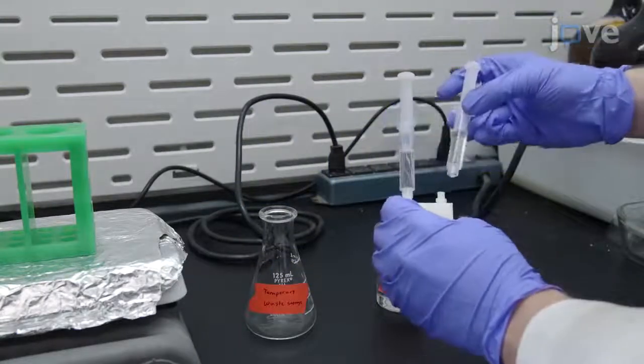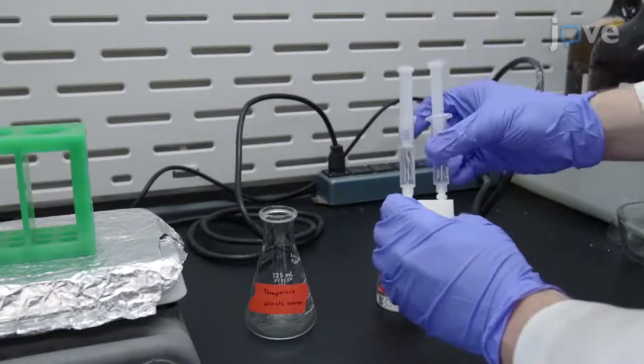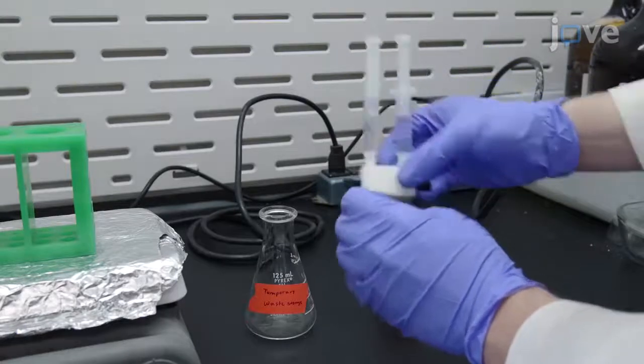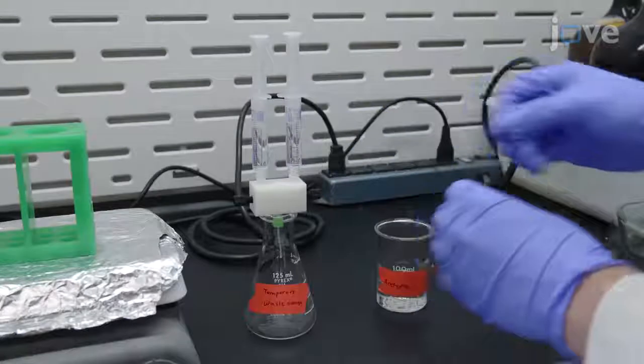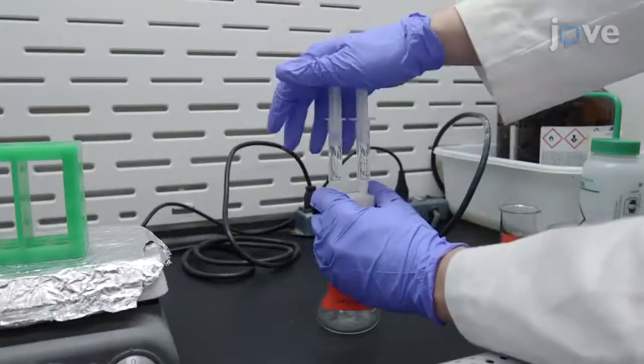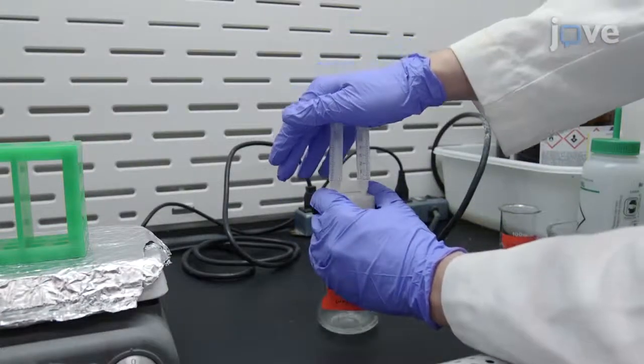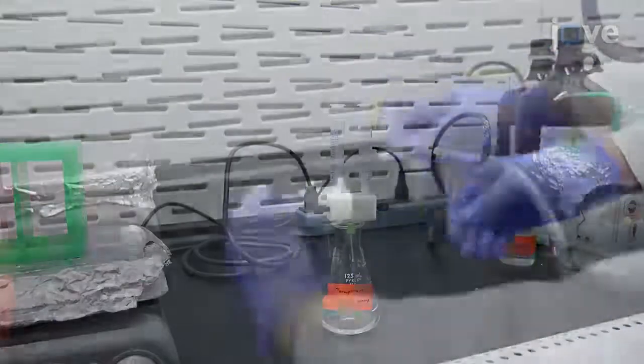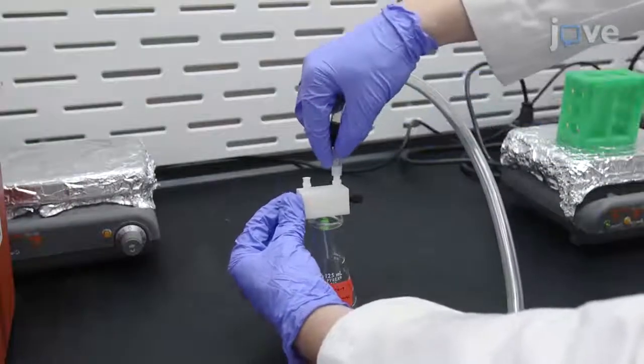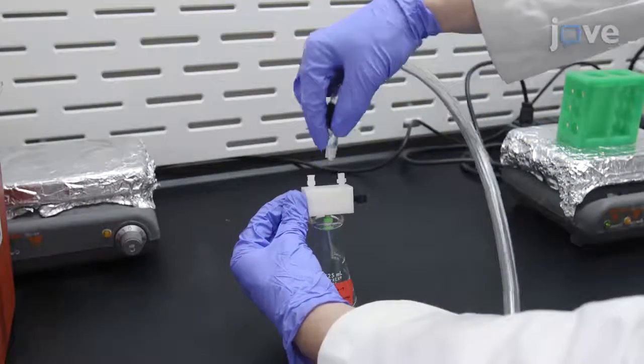Lock the syringes into the inlet adapters and set the assembly over a waste container. Steadily depress the plungers to send the solvent through the mixing chamber over the course of a few seconds. Then, remove the syringes and dry the mixer with a stream of nitrogen gas.